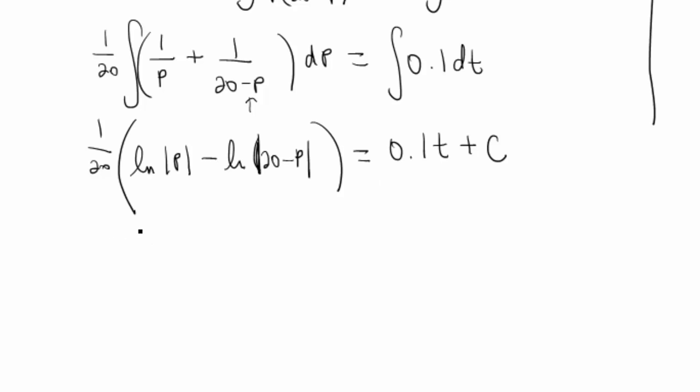Now comes some fun algebra. Hopefully you remember some properties of logs here, because I'm going to start throwing some at you. We've got 1 over 20, that's still factored out. When we subtract two logs, if we want to smash those together, that means we're going to divide their insides. So that's going to become the natural log of p over 20 minus p equals 0.1t plus c.